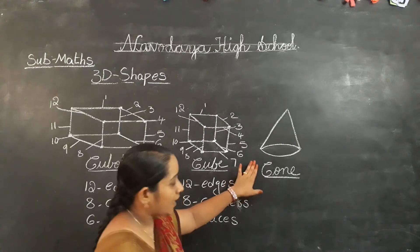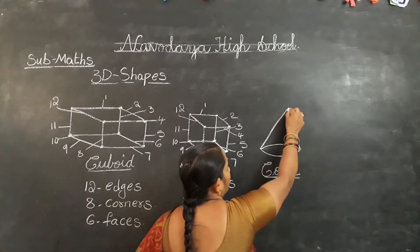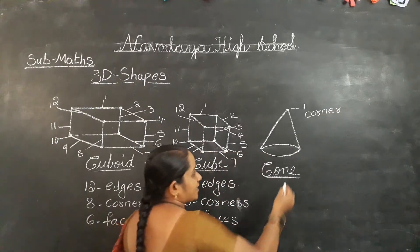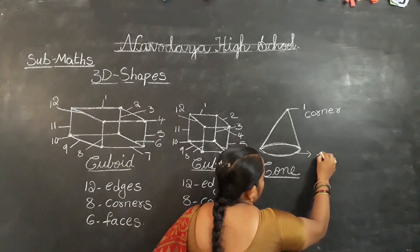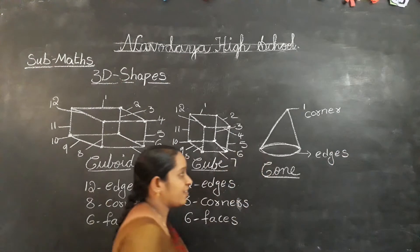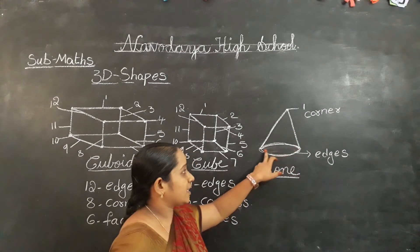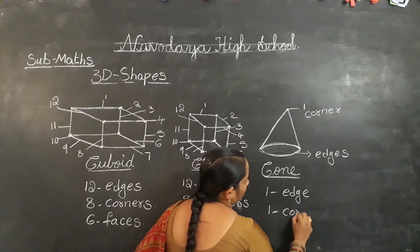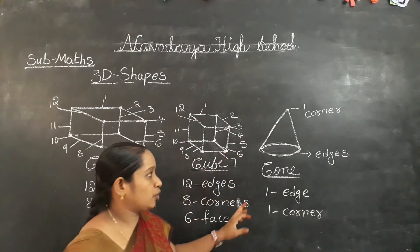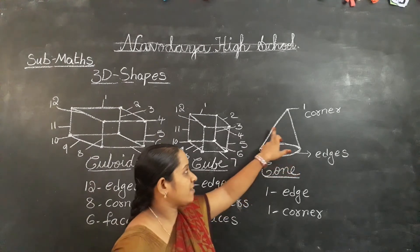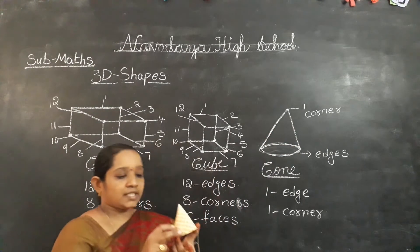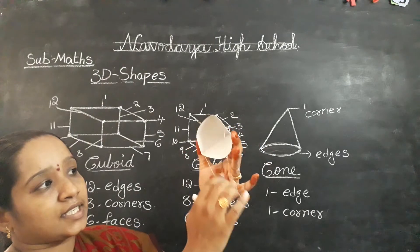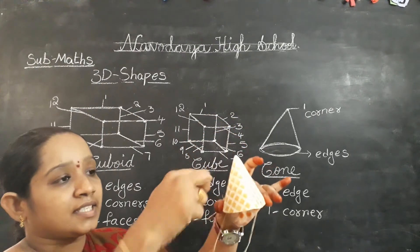The next shape is cone. A cone has only one corner and only one edge — that is a circular edge. The faces are: one curved face and one circular flat face. So a cone has 1 edge, 1 corner, and 2 faces — one flat circular surface and one curved surface.